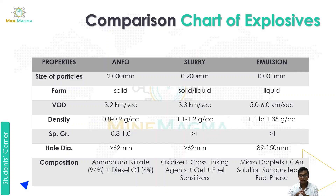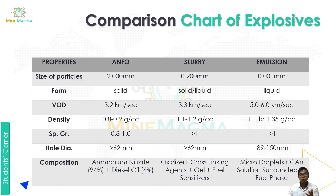The velocity of detonation: ANFO is 3.2 km/s, slurry is 3.3 km/s, and emulsion is 5.0 to 6.0 km/s — making emulsion's VOD the highest. Density: ANFO is 0.8 to 0.9 g/cm³, slurry is 1.1 to 1.2 g/cm³, and emulsion is 1.1 to 1.35 g/cm³.